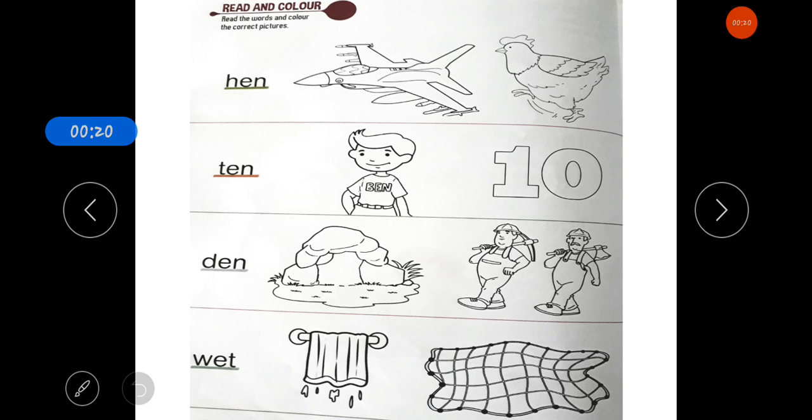Your first worksheet is read and color. Read the words and color the correct picture. This is the worksheet you will get on page number 32. What do you have to do in this worksheet? You have to read the words and color the correct picture.